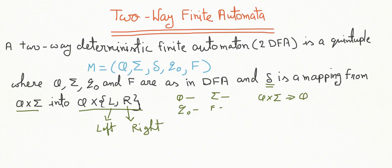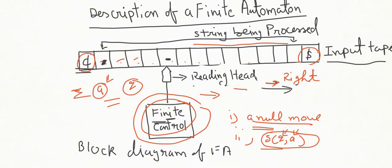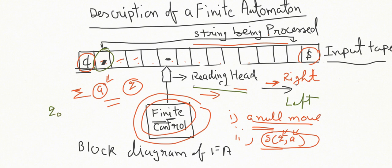If you recall the block diagram of finite automaton, in the standard DFA we have restricted the movement of the reading head towards right only. But in the case of two-way finite automaton, the input tape head can move in both directions, that is right as well as left. The machine starts on the leftmost symbol of the input in the initial state q_naught. At any time, depending on the state and the symbol read, the automaton changes its state and moves its tape head left or right as described in the move.